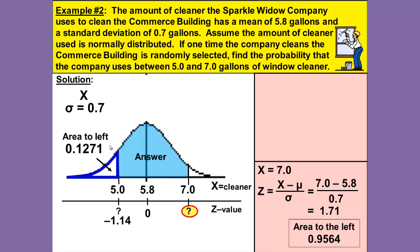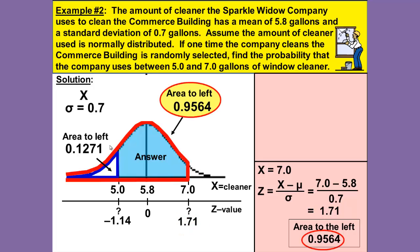Our table gives us the area to the left as 0.9564. And we will highlight that area, the area to the left of 1.71 and therefore to the left of 7.0, and highlight that in red and the area to the left is 0.9564.